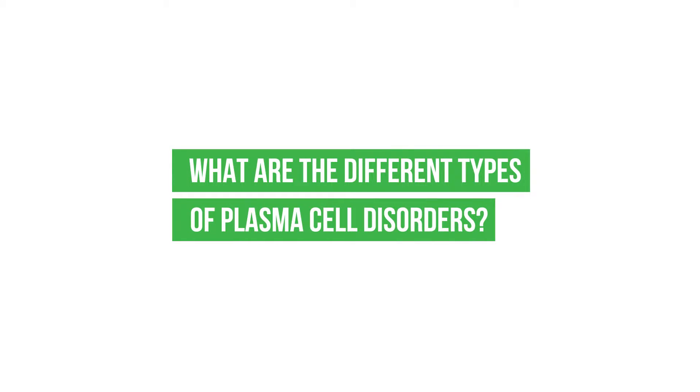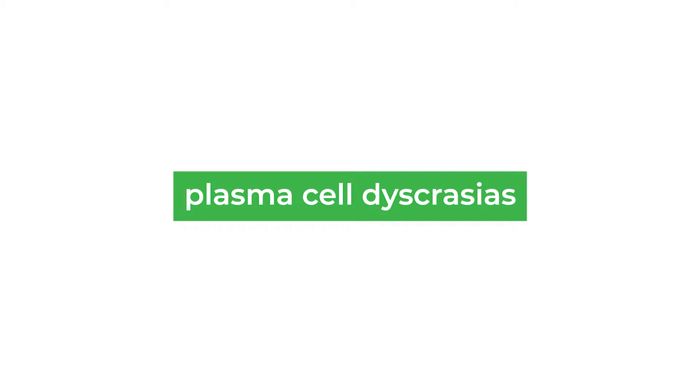What are the different types of plasma cell disorders? There's a whole group of disorders that are related — we call them plasma cell dyscrasias. These represent disorders of the plasma cell, which is part of the normal immune system. These are cells that normally make antibodies to fight infection, and when they start to go wrong, becoming cancer or cancer-like and growing out of control, they can form a variety of different disorders.